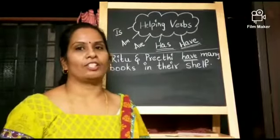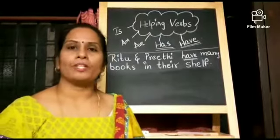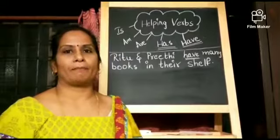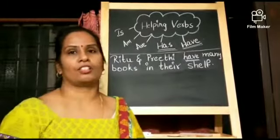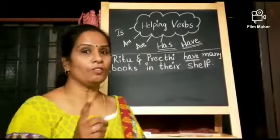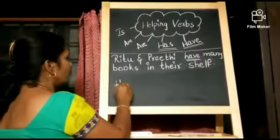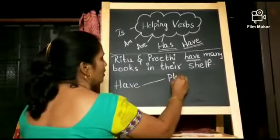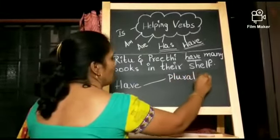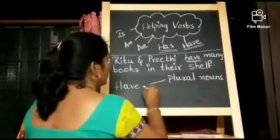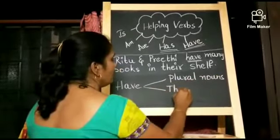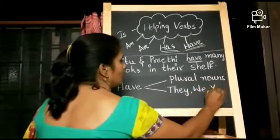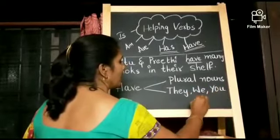But I want to add a point here children. Have is always used with I and you also. Remember that children. Let's see some examples. I have a chalk. You have a nice car. So, we can use have for plural nouns — they, we, you and I.